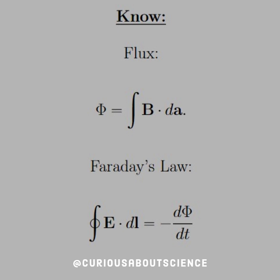So what do we need to know for this question? Well, the flux is the surface integral, and Faraday's law says that if we boil this down to where the magnetic field is changing — or the flux is changing — we get a line integral of E dot dL, which is the Amperian loop in this case, and we find that d by dt of phi will give us what the electric field is. Let's see it in action.